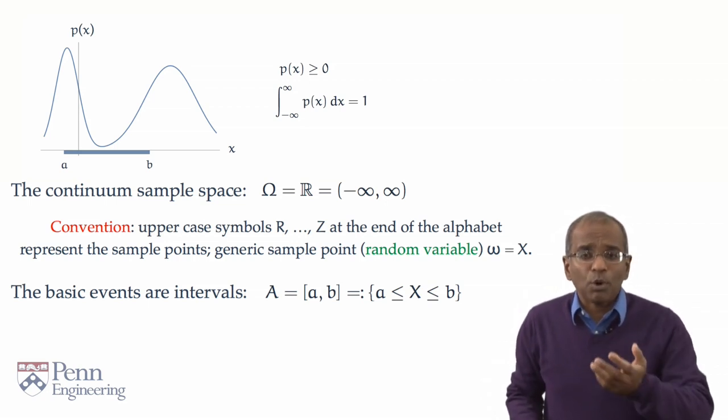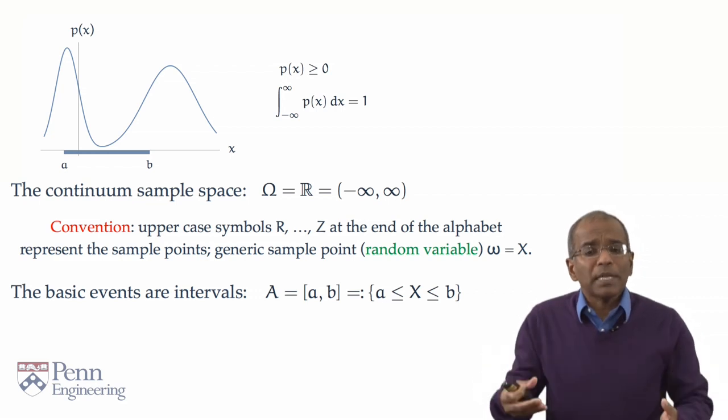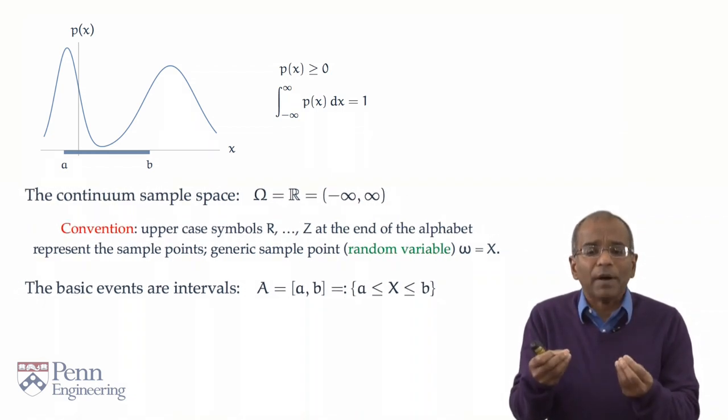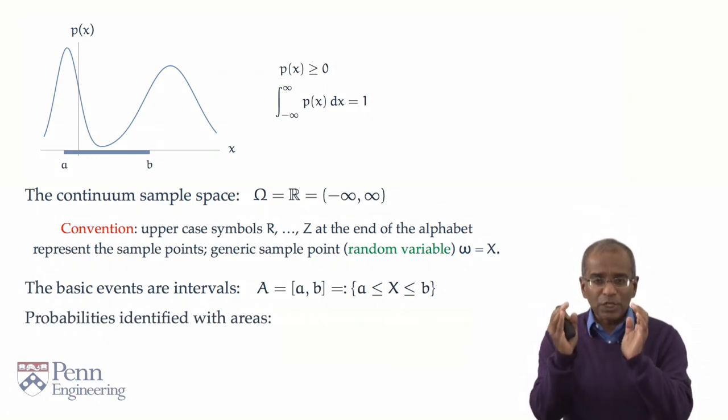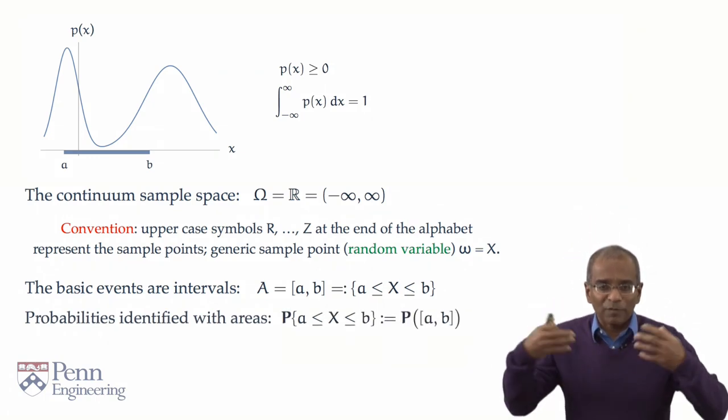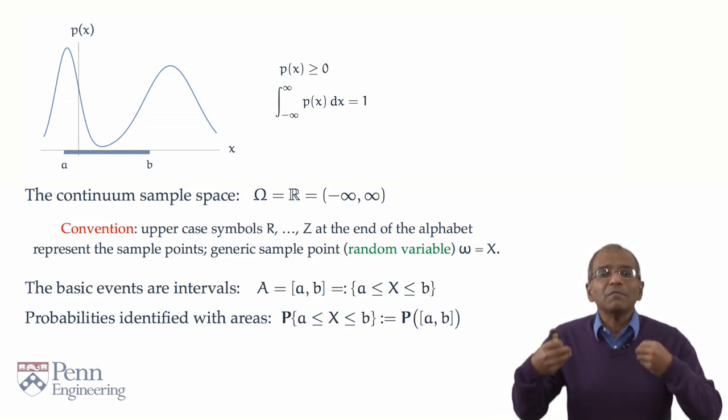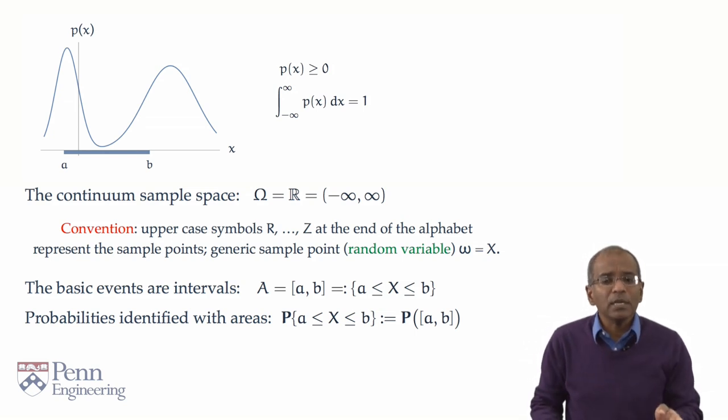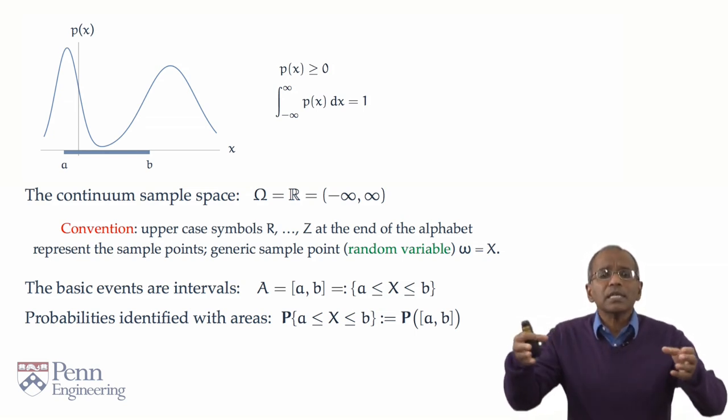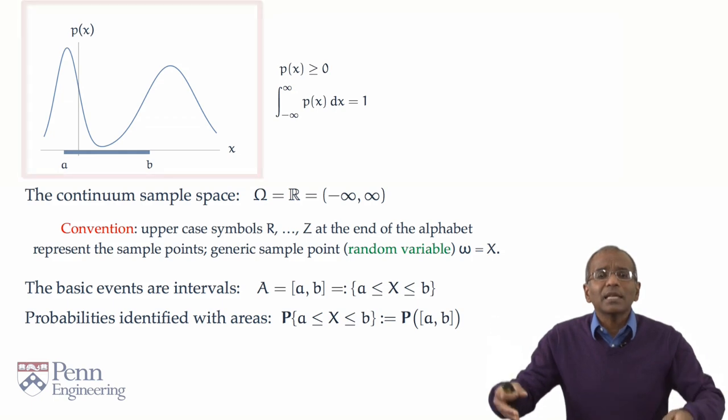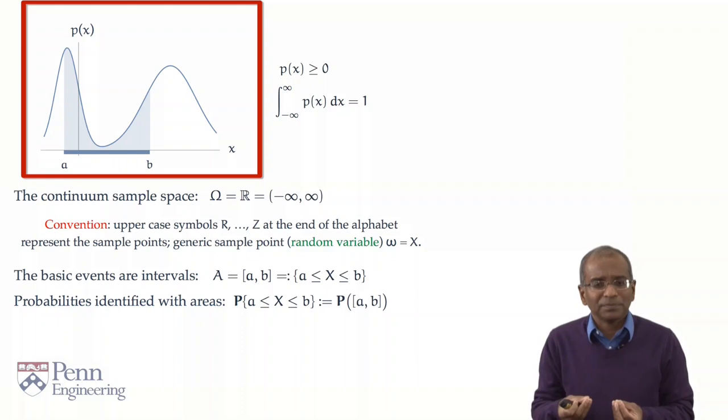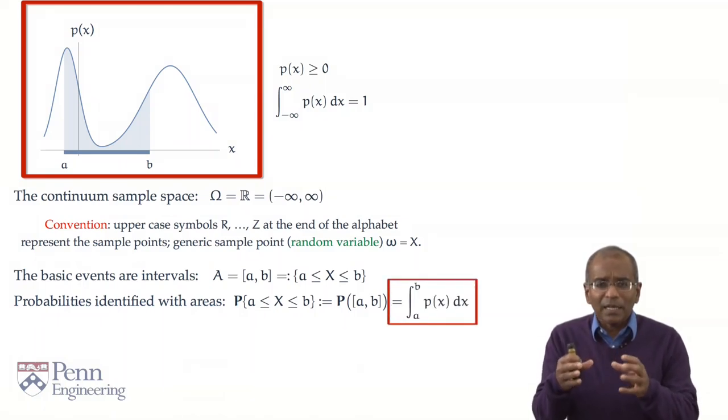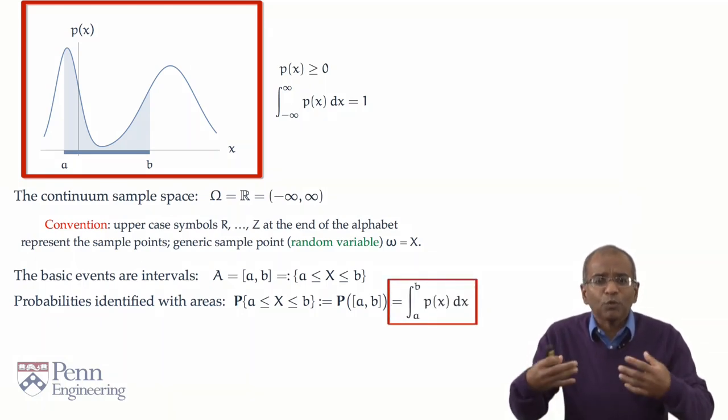We now want to assign a probability measure to this. Probabilities here are identified with areas. So we're interested in the probability of the interval from a to b, or more verbosely, the probability that a random variable, the outcome of a chance experiment lies between a and b, and we simply identify it as the area under the curve from a to b of the density function.